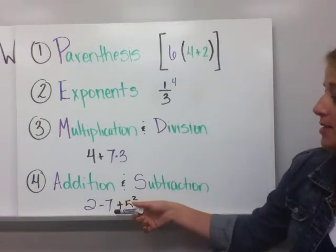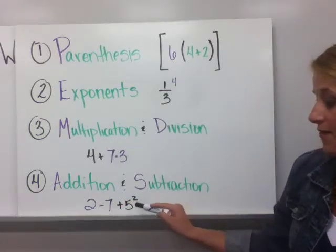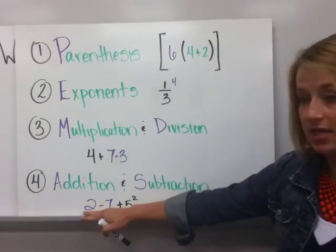In the expression two minus seven plus five squared, you're going to work that five squared first, then the addition and the subtraction.